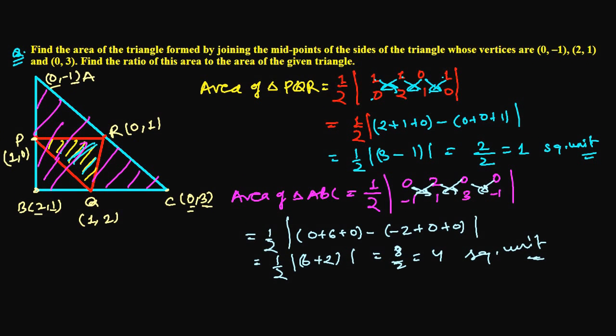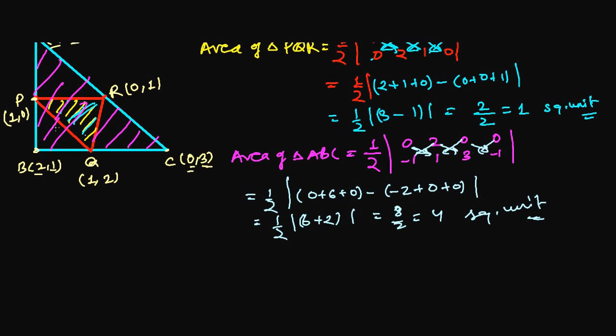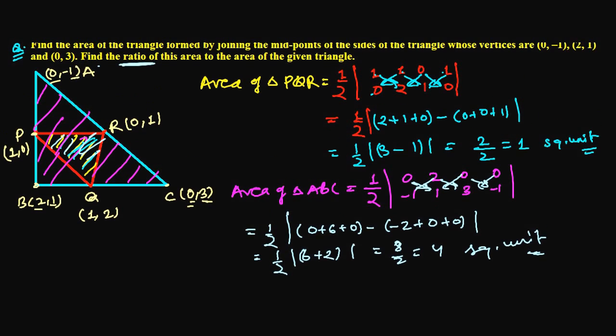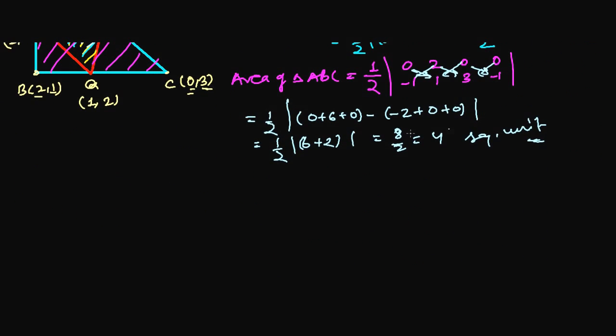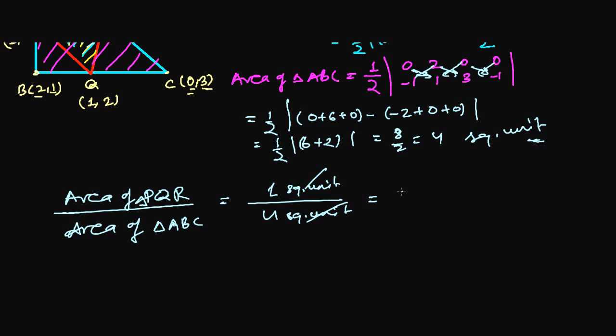So we found out individually both areas. Now the question is saying find the ratio of this area to the area of the given triangle. So simply area of PQR divided by area of triangle ABC - this is one square unit and this is four square units. Since it's ratio, it should be no unit or there should not be anything, it's unitless. And our ratio is 1 ratio 4. So we got the answer.